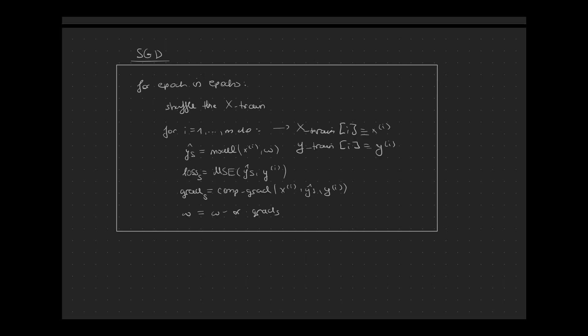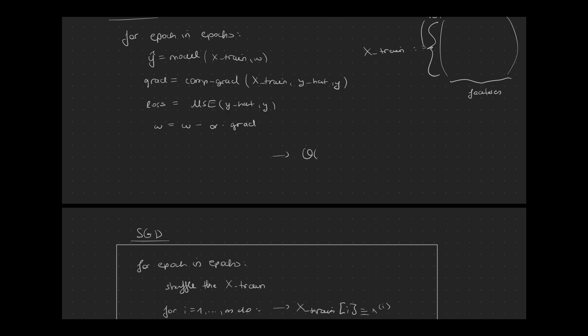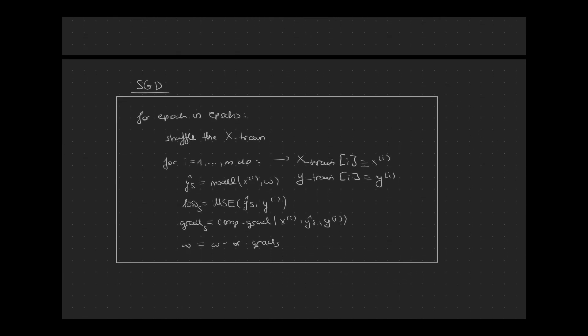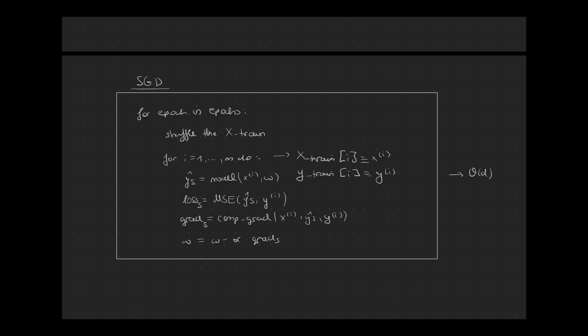Many students are confused by the term faster iteration since they think that Stochastic Gradient Descent is computationally more efficient than Gradient Descent — and this is not the case. Let's denote the time complexity of Gradient Descent for one iteration as O(N·D). Then the cost for one iteration in Stochastic Gradient Descent would be O(D). The reason is that we go over each instance separately in Stochastic Gradient Descent, but in total we also go over all training instances — just not all at once as in Gradient Descent. So why would you use Stochastic Gradient Descent when the time complexity is basically the same for one epoch?